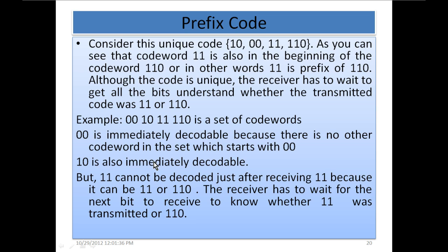1 0 is also immediately decodable for the same reason — it is not a prefix of any other codeword. 1 0 is not in the beginning of any other codeword. But 1 1 cannot be decoded just after receiving 1 1, because it could be 1 1 or 1 1 0. The receiver has to wait for the next bit to know whether 1 1 or 1 1 0 was transmitted.